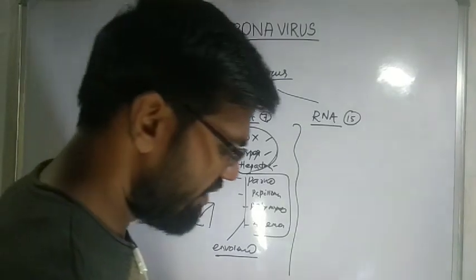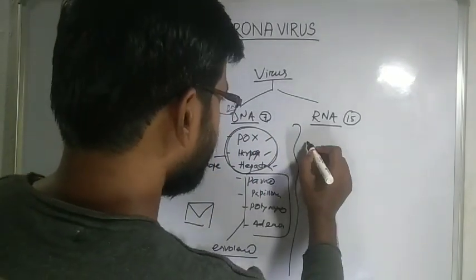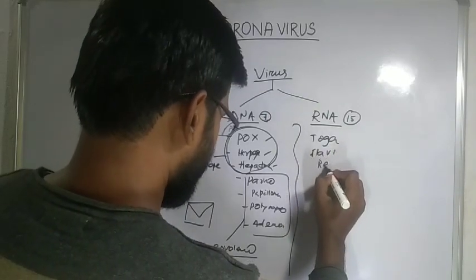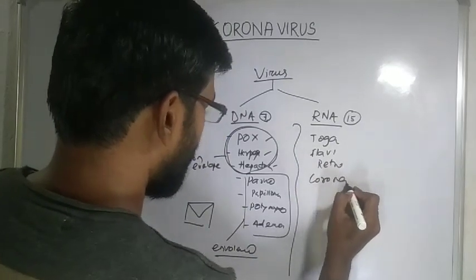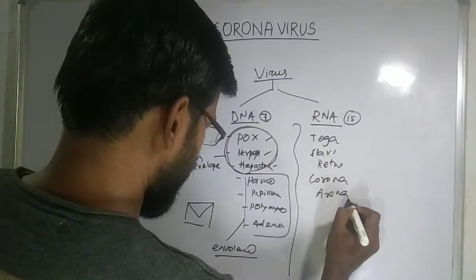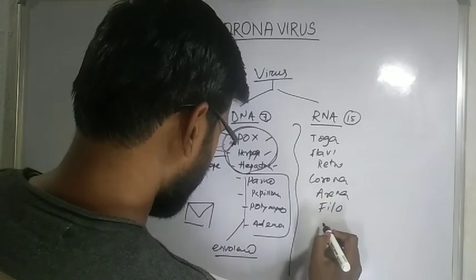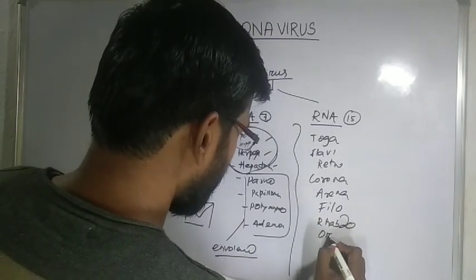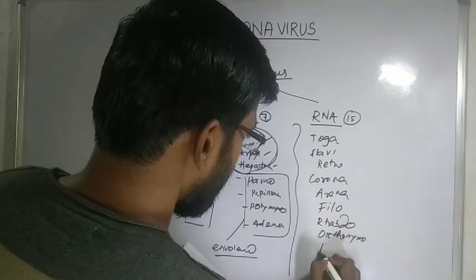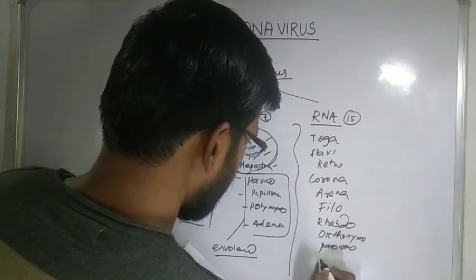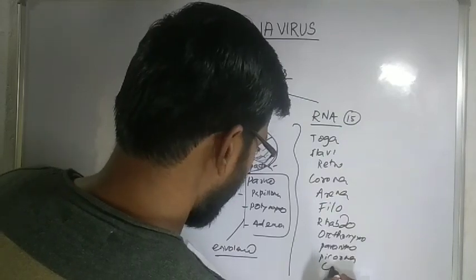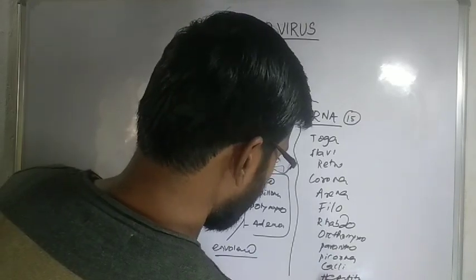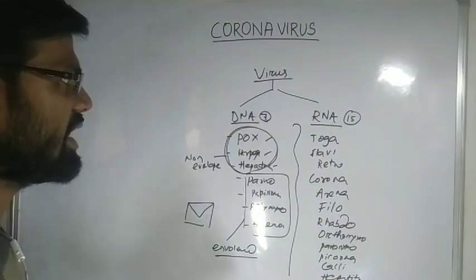Coming to the RNA viruses, there are 15 in total. These include: togavirus, flavivirus, retrovirus, coronavirus, filovirus, rhabdovirus, orthomyxovirus, paramyxovirus, picornavirus, calcivirus, hepatitis virus, and reovirus. These 15 viruses all have RNA as their genetic material.